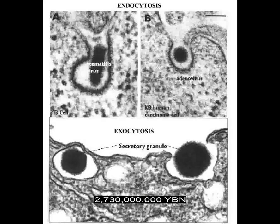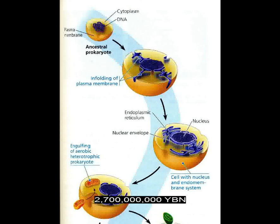Endo and exocytosis evolve — cells can now eat other cells. Endocytosis is a process of cellular ingestion by which the plasma membrane folds inward to bring substances into the cell. Exocytosis is a process of cellular secretion in which substances contained in vesicles are released from the cell by fusion of the vesicle membrane with the outer cell membrane. The eukaryotic cell evolves — the first cell with a nucleus, the first protist. The nucleus may develop from the infolding of plasma membrane. In prokaryotic cells, DNA is concentrated in a non-membrane-enclosed region called the nucleoid, while in eukaryotic cells, most DNA is contained in a nucleus bounded by a double membrane.